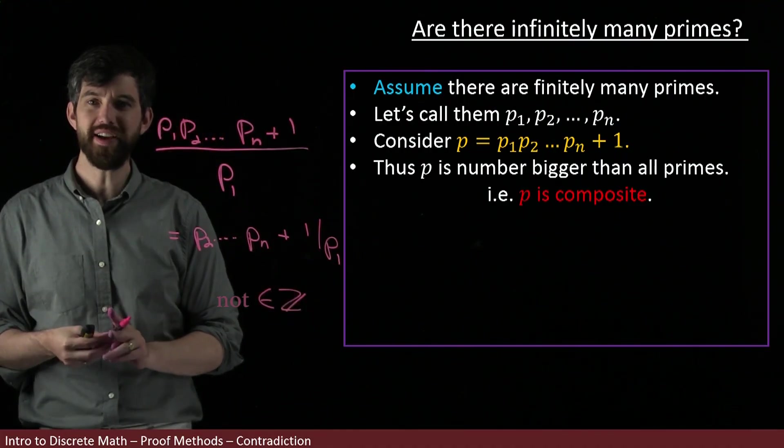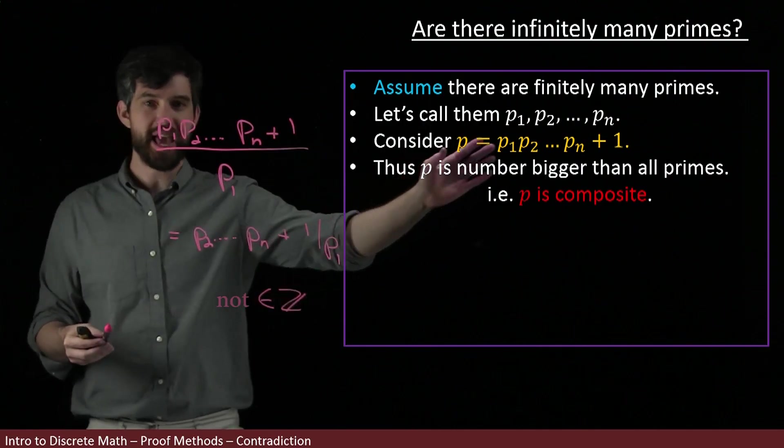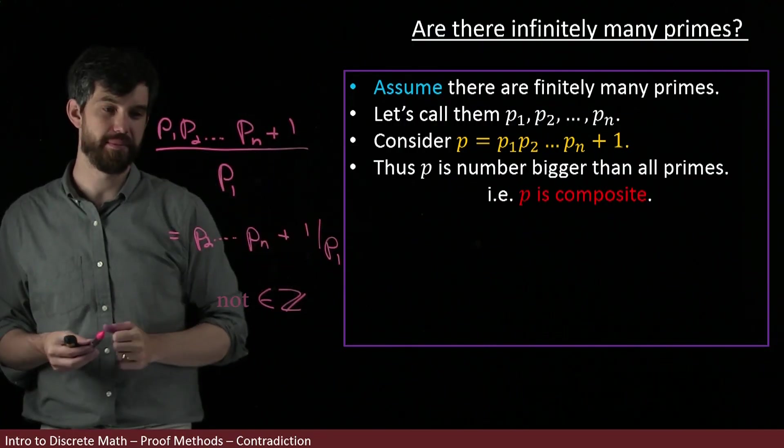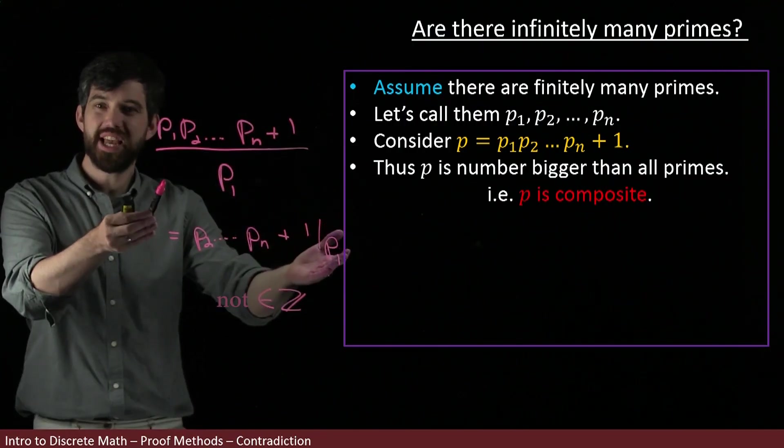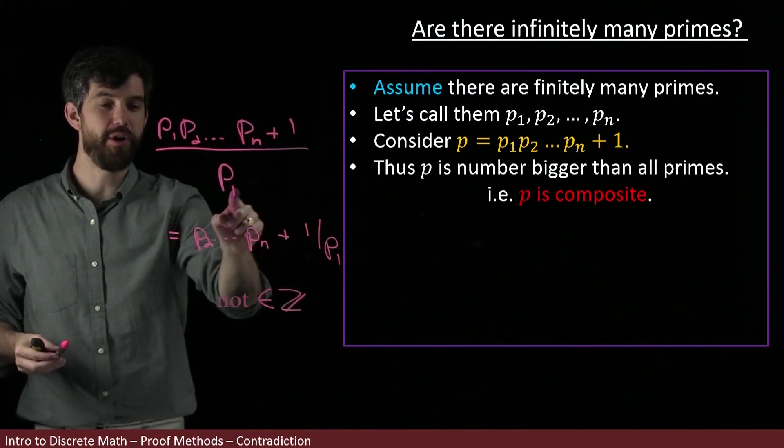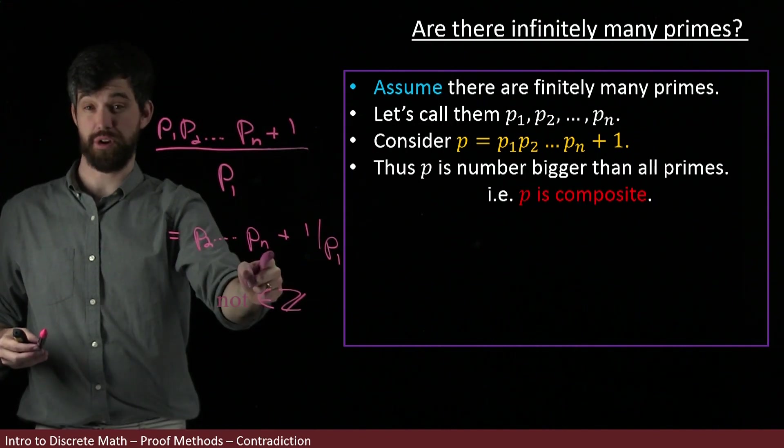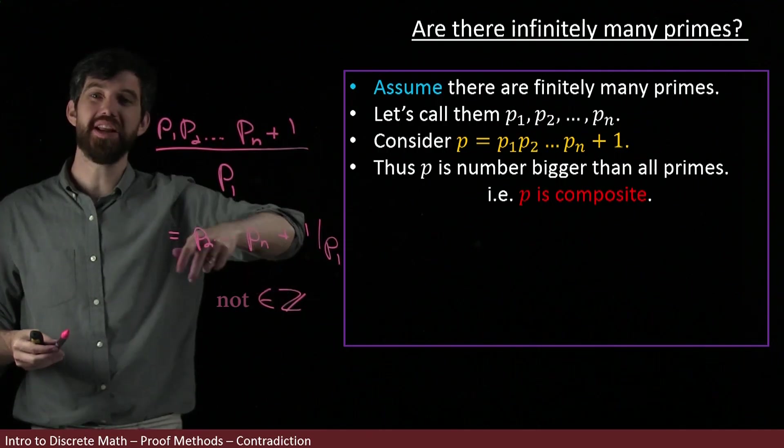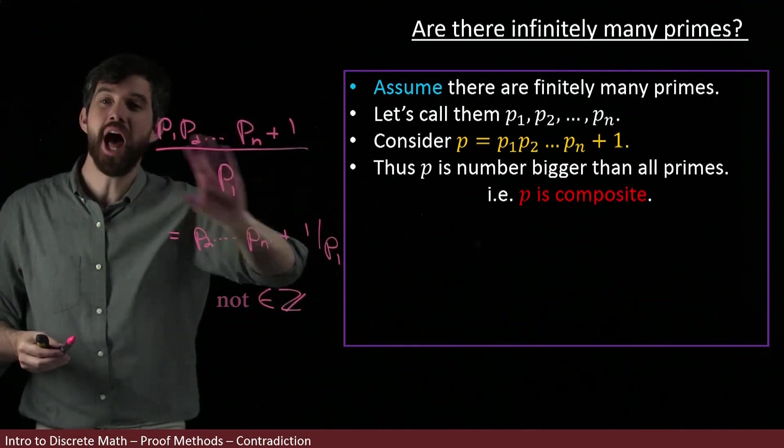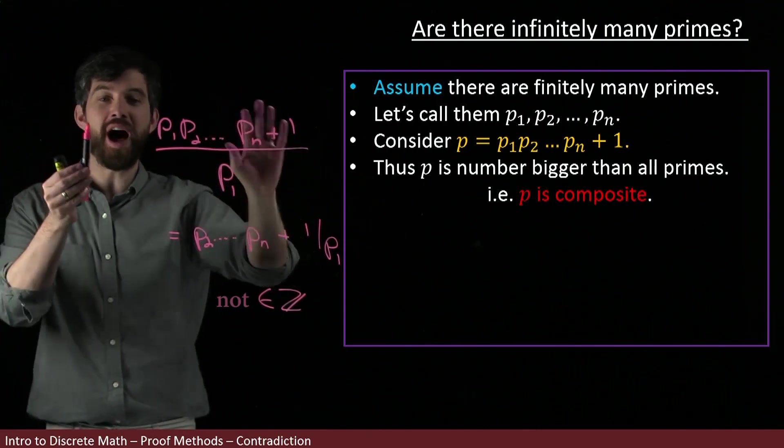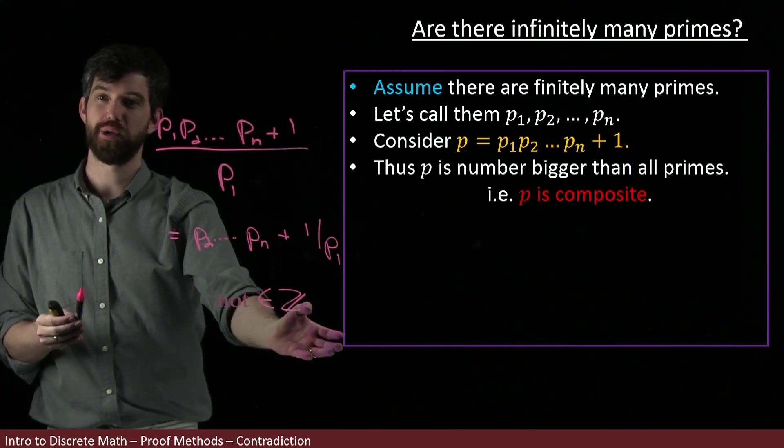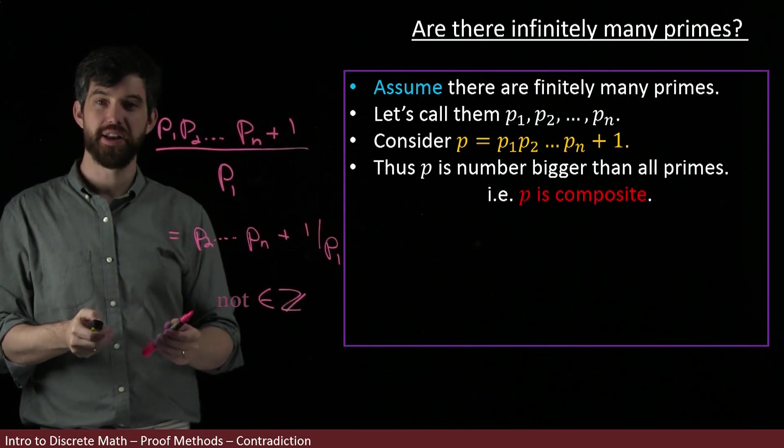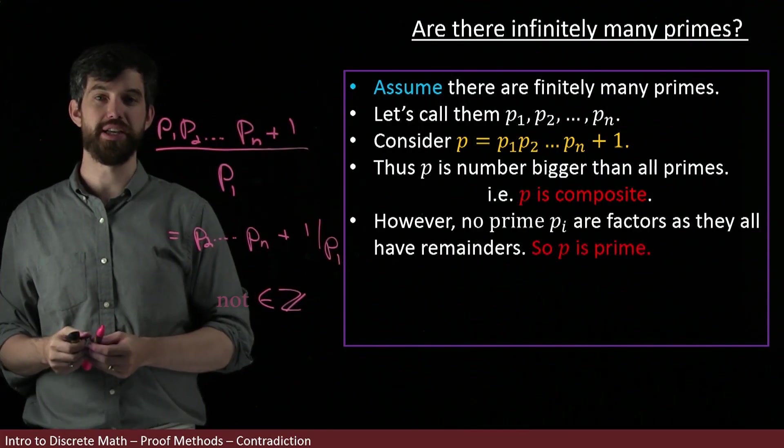So this p is not divisible by p₁—p₁ is not a factor of it. But I could have done the same argument for p₂, p₃, all the way down to pₙ. None of these primes divide this and give me an integer. In other words, none of these primes are a factor for this composite number.